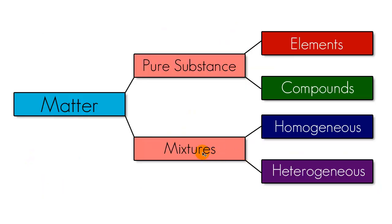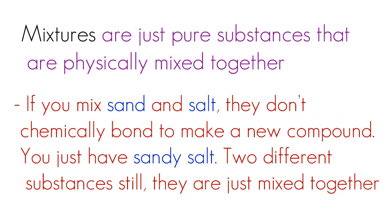So whenever we look at our graph we can say okay, so how can you jumble things together differently and get these two different types of mixtures, homogeneous and heterogeneous. Let's go ahead and take a look at that.